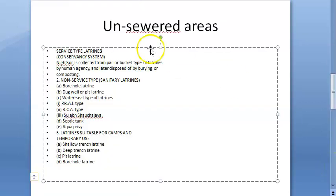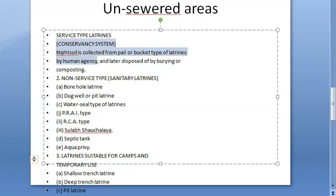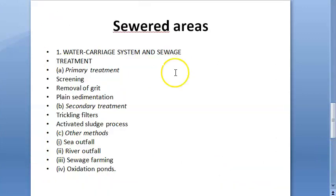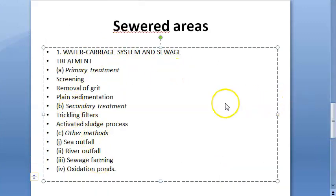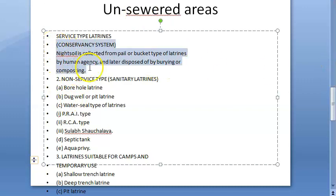In unsewered areas where there is no sewage system, there are many types of latrines. The borehole latrine is one found in unsewered areas. In sewered areas there is a different water carriage and sewage system. In unsewered areas you have non-service type, service type, and latrines suitable for camps and temporary use.